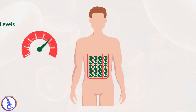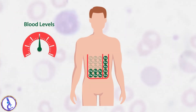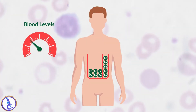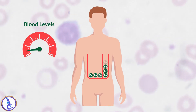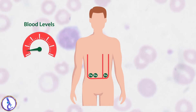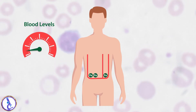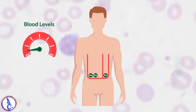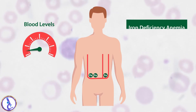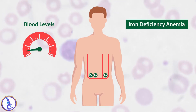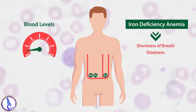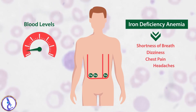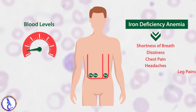If not enough iron is taken in from the diet, blood levels will drop. Over time, the iron stored in tissues will be used, eventually depleting the stored iron. Insufficient levels of circulating iron and iron storage will eventually lead to iron deficiency anemia.